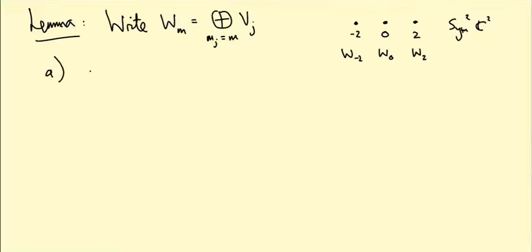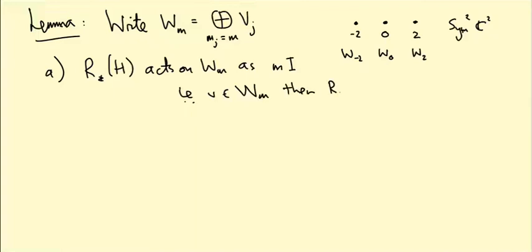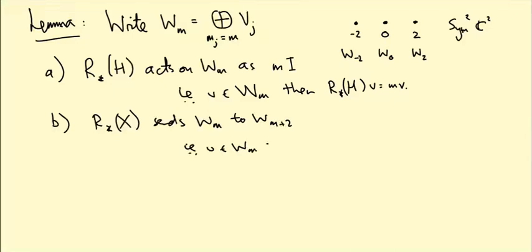So here's the claim. First of all, r_star H acts on W_M as the matrix M times the identity. In other words, if v is in W_M, it's a weight vector with weight M, then r_star H v equals M v. And similarly for X, r_star X sends W_M to W_{M+2}. In other words, if v is in the weight space W_M, then r_star X v is in the weight space W_{M+2}. And similarly for Y, r_star Y sends W_M to W_{M-2}.